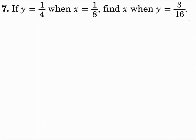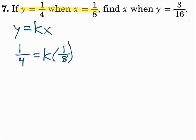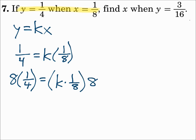Number 7. If y equals 1 fourth when x equals 1 eighth, find x when y equals 3 sixteenths. This is direct variation, so y equals kx. Use the first half to find k: substitute 1 fourth for y and 1 eighth for x. Since that's k times 1 eighth, divide both sides by 1 eighth — which means multiplying by the reciprocal 8. On the left, 8 times 1 fourth gives 8 fourths, which is 2. On the right, 1 eighth times 8 is 1, so k is 2.